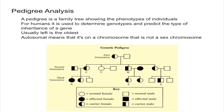One thing to note about autosomal dominant traits is that every affected person is going to have a parent that is also affected, because the allele cannot hide and will definitely be expressed in one of the parents. On the other hand, with recessive traits, the parents are generally not affected — the parents are generally carriers.